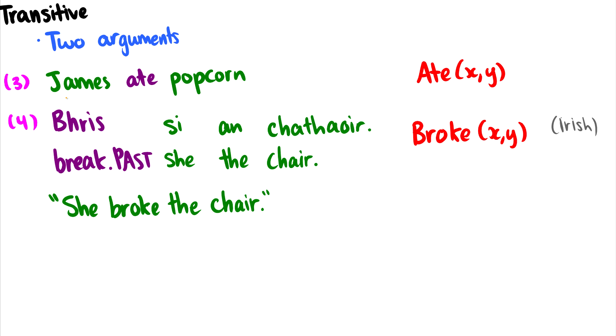Example three: 'James ate popcorn.' So 'ate' is our verb. Now we can see there's two arguments. The first argument is James, which is the eater, and popcorn is the second argument, which is the thing that is being eaten. We can write this logically as something like ate(x,y), and this would be something like x ate y, or more specifically, someone ate something. So this takes two arguments.